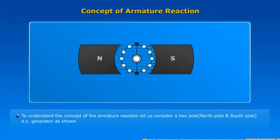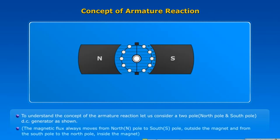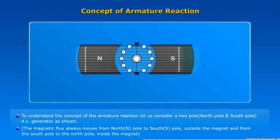To understand the concept of armature reaction, let us consider a 2-pole, north pole and south pole DC generator as shown. The magnetic flux always moves from north N pole to south S pole outside the magnet and from the south pole to the north pole inside the magnet.